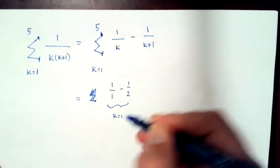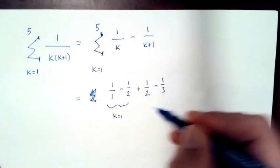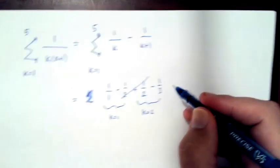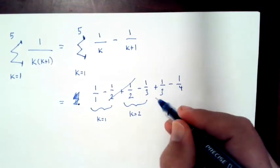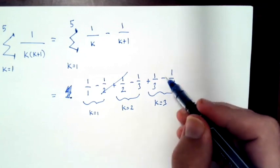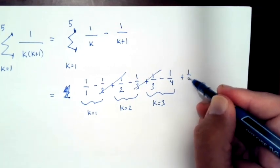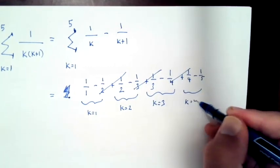Then we start writing out the terms. For k equals 1, we have 1 over 1 minus 1 over 2. For k equals 2, we have 1 over 2 minus 1 over 3. But wait a minute, those 1 over 2 terms will cancel. This keeps happening.